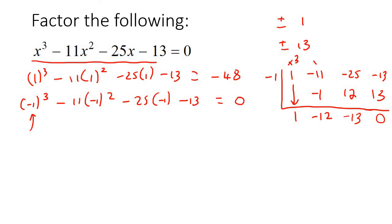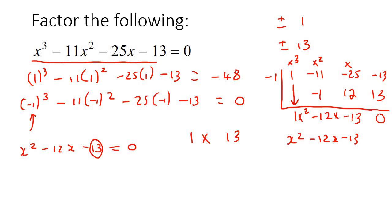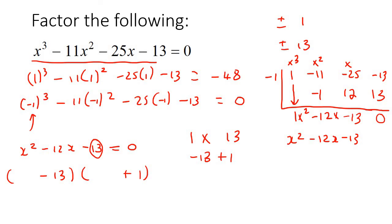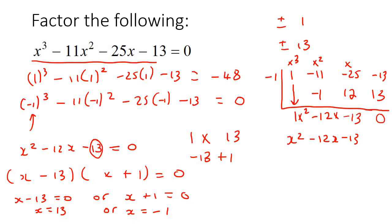Now remember, this was your x cubed, this was your x squared, this was your x. So now you drop that to x squared and x — you have x squared take away 12x take away 13. Then go factorize that. It's a normal trinomial — look at the factors of 13, which is 1 times 13. If you use 1 and 13, how could you make negative 12? You could say negative 13 plus 1. So you open two brackets: x minus 13 and x plus 1. Solving gives x equals 13 or x equals negative 1, and then your other answer is also x equals negative 1. So there are your three answers.